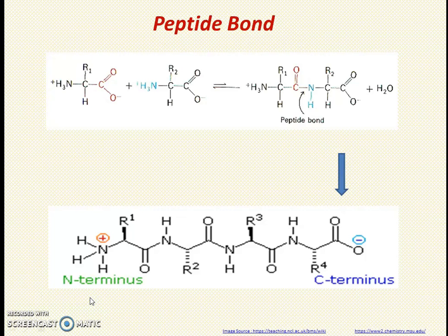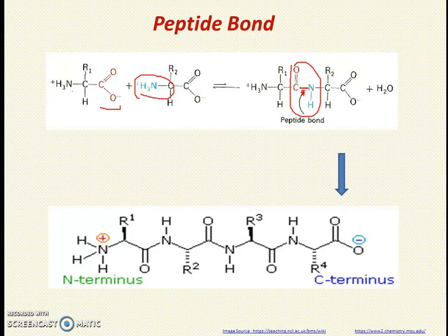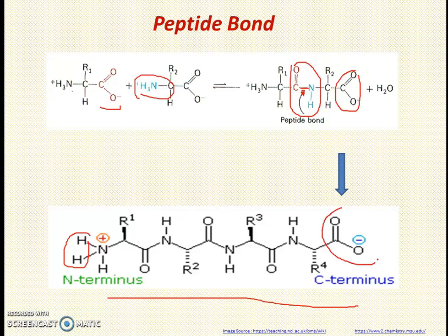Now let's look at peptide bond formation, which is very important. A peptide bond is formed between the carboxyl group of the first amino acid and the amino group of the second amino acid. A water molecule is removed in this process, forming a bond between CO and NH — this bond is called the peptide bond. The carboxyl group then joins with the next incoming amino group forming another peptide bond, and so on.